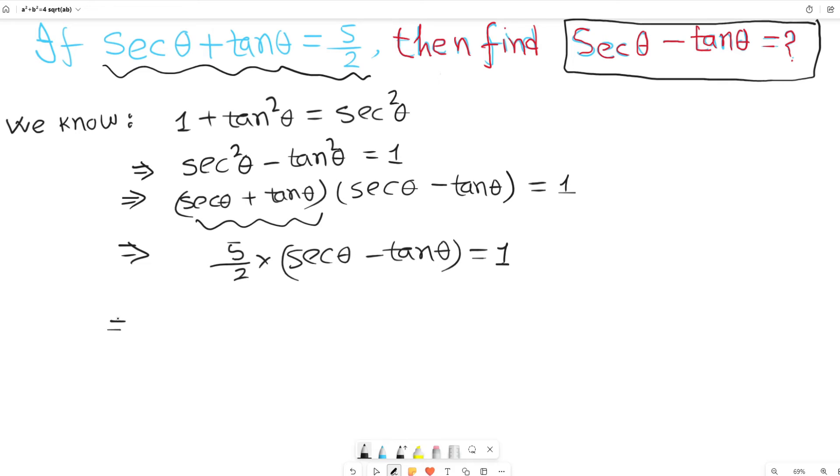5 over 2 multiplied by sec theta minus tan theta equals 1. I want to multiply the right hand side by 2 over 5. To make it equal, I have to multiply this side as well by 2 over 5.